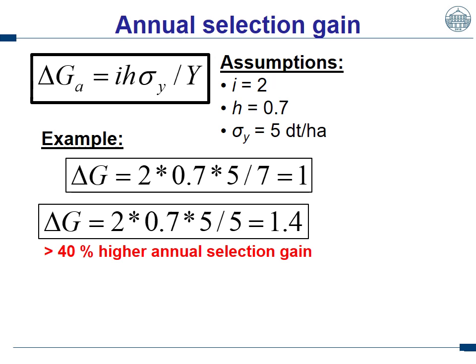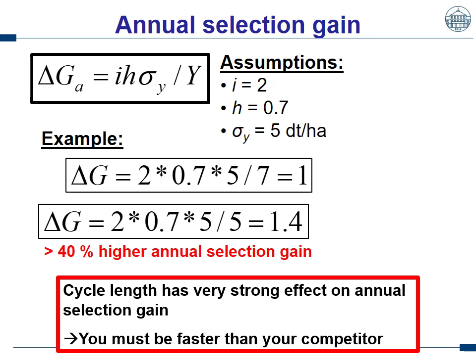This is quite a simple example and not really full reality, but I just want to show you that the number of years has a tremendously large effect on the determination of annual selection gain. From a more practical point of view, when you come up with a variety extraordinary in performance, but your competitor had the same luck one year before and entered registration trials one year earlier with a similar variety — although you are now better, you are one year behind and the market is gone to the other. You must be faster than your competitor. The winner takes all.